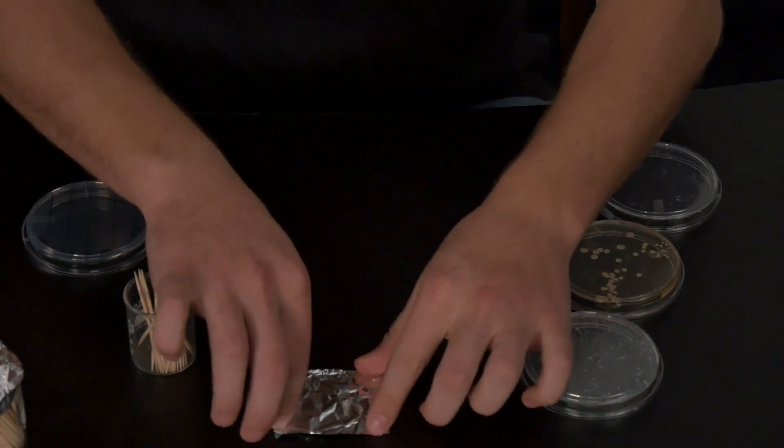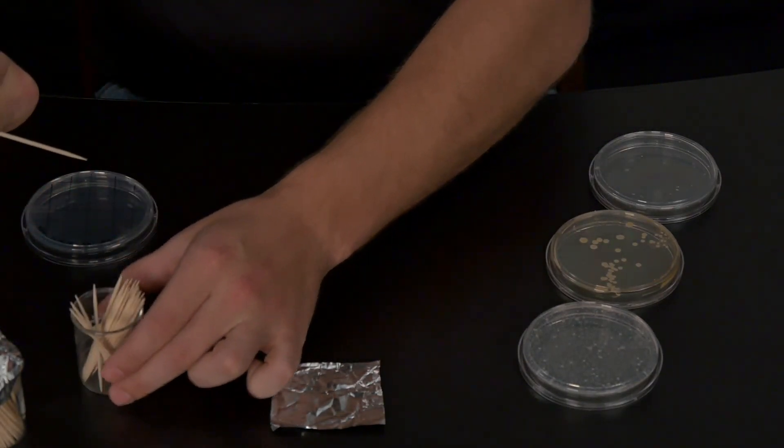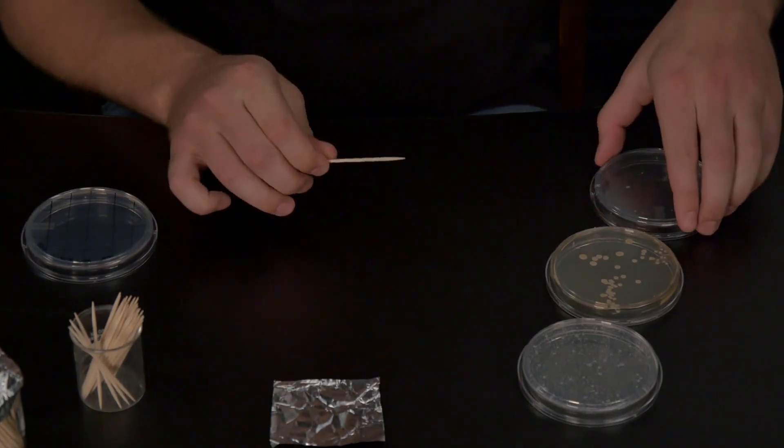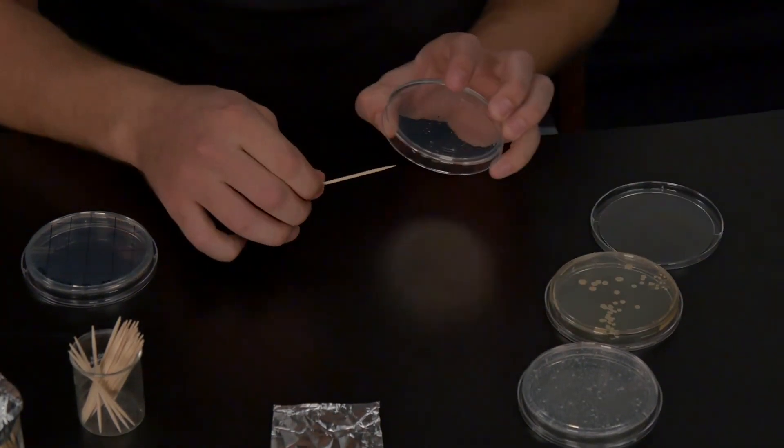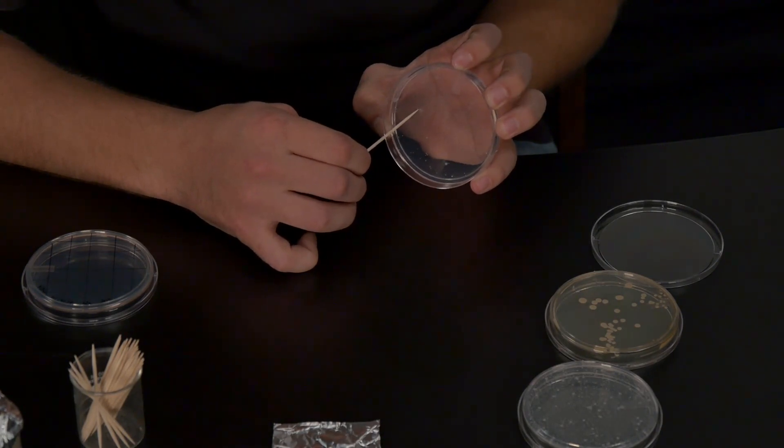Take a sterile toothpick from its container, being careful not to touch one of the tips of the toothpick. Take one of the plates from the serial dilution where your bacteria have already been growing, and choose a bacterial colony that seems to be spaced farther apart from others.